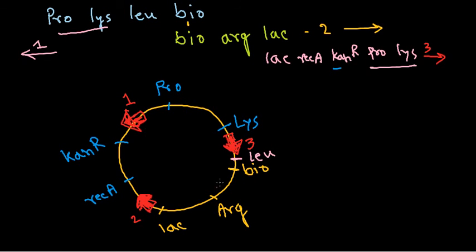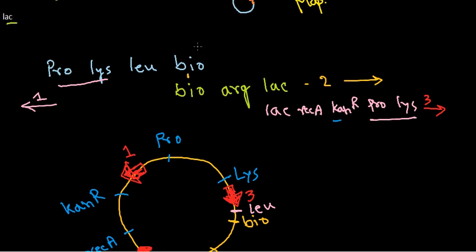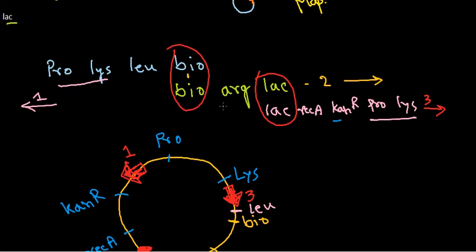That's how we get the complete circular gene map. It's straightforward once you identify the overlapping regions between the different HFR strains, as those overlaps give you the insight to orient each segment correctly. Finding the overlapping regions also lets you determine the gene transfer direction for each strain. That's how you solve this type of interrupted mating problem.